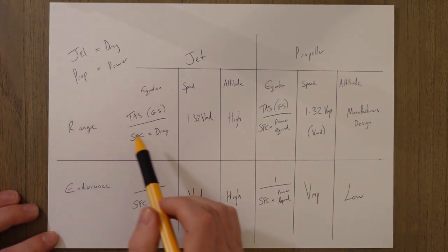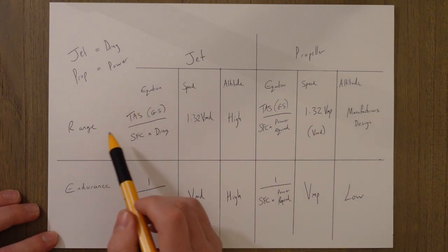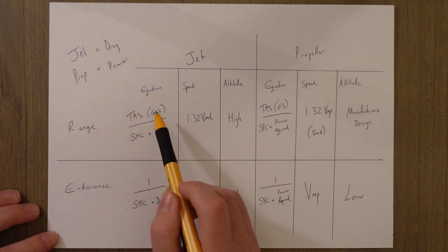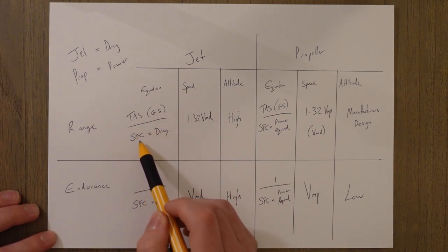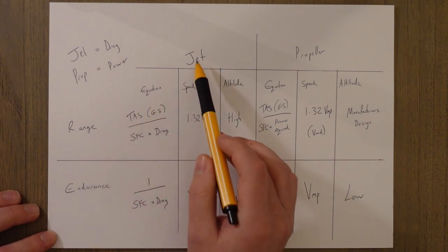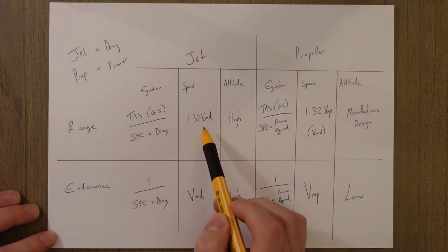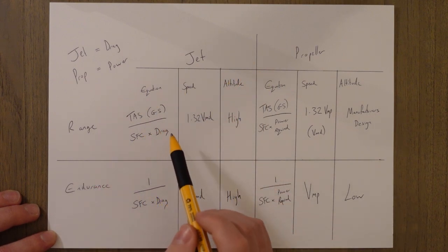So if we think about range for a second, bit of a refresh on the previous class. The equation for range is either the true air speed or the ground speed if you're thinking about specific ground range over the specific fuel consumption times drag which is just the fuel flow.